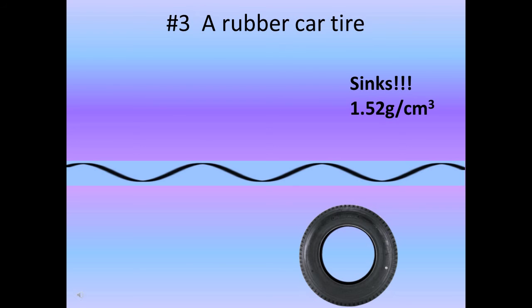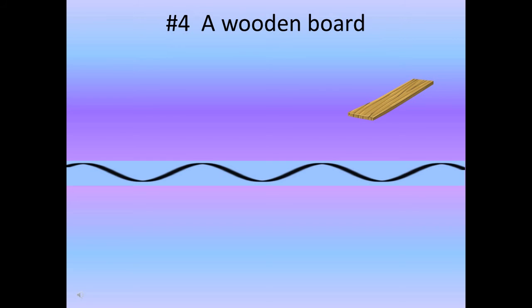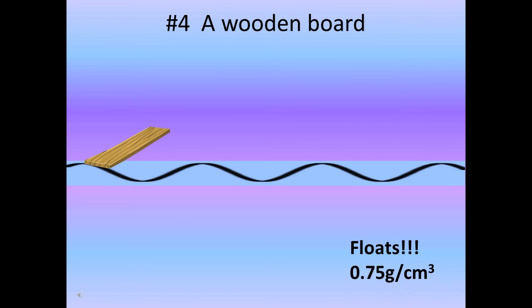For a car tire to hold air, it needs a rim in the center to trap the air inside. Without that rim, your average car tire will sink. Next, a wooden board actually floats — wood has an average density of 0.75 grams per centimeter cubed. However, if it floats long enough and becomes saturated with water, it will eventually sink.